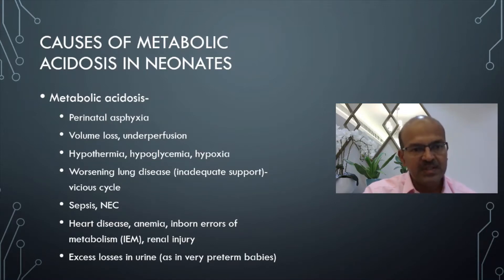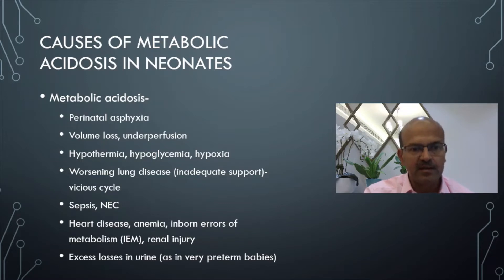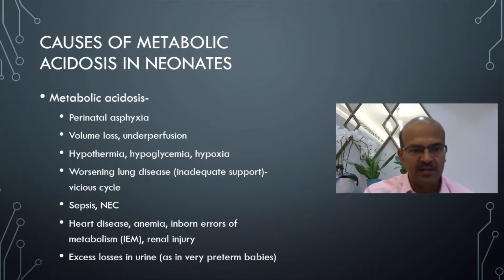Sepsis can cause uncoupling of the oxidative phosphorylation and poor tissue perfusion can be a factor as well. The same happens in necrotizing enterocolitis where third spacing and underperfusion can be a factor, as well as the sepsis-like manifestation. In both sepsis and NEC, we may have suppressed cardiovascular function as well.